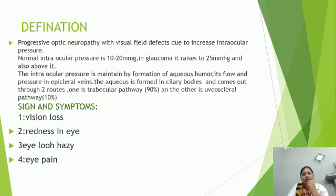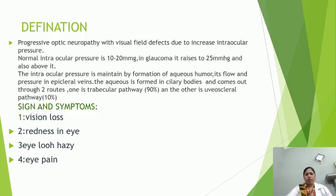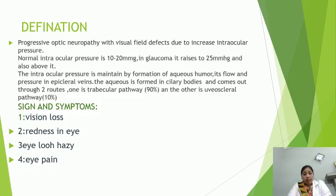Glaucoma is the optic neuropathy with visual field defect due to increased intraocular pressure. The normal intraocular pressure is 10–20 mmHg; in glaucoma it rises to 25 mmHg. The signs and symptoms are visual loss, eye pain, and redness in the eye.